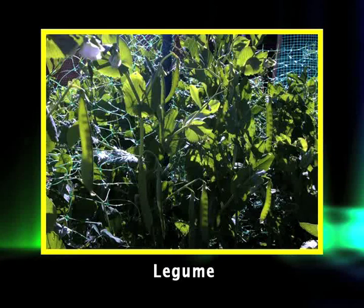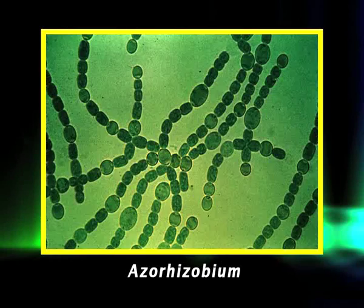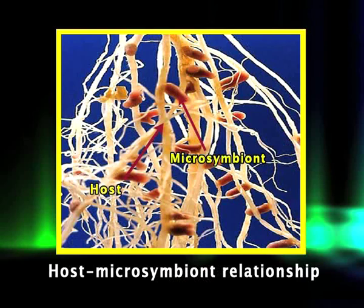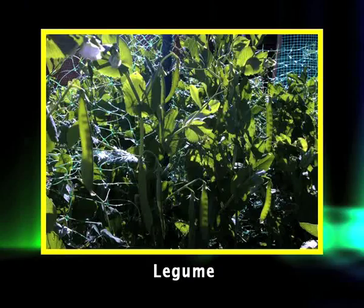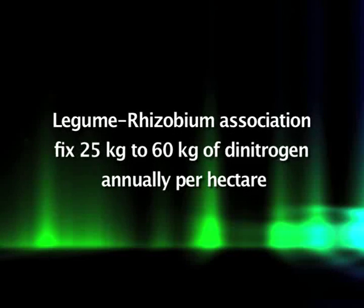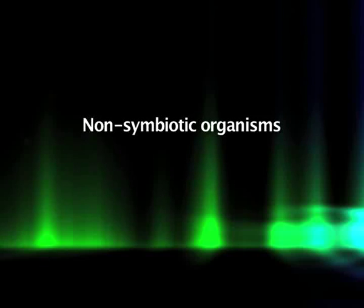In the case of legumes, the microsymbiont is a bacterium of one of three genera: Rhizobium, Bradyrhizobium, or Azorhizobium. Collectively these organisms are referred to as rhizobia. Curiously, only one non-leguminous genus, Parasponia, which belongs to the family Ulmaceae, is known to form root nodules with rhizobia. Symbiotic nitrogen fixers, particularly legumes, contribute substantially more nitrogen to the soil pool than free-living bacteria. Typically a hectare of legume-rhizobium association will fix 25 to 60 kg of dinitrogen annually, while non-symbiotic organisms fix less than 5 kg per hectare.